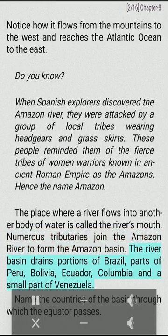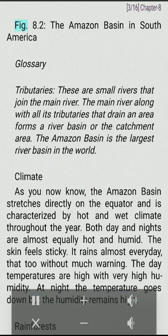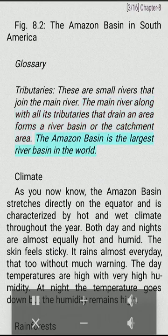Numerous tributaries join the Amazon River to form the Amazon Basin. The river basin drains portions of Brazil, parts of Peru, Bolivia, Ecuador, Colombia and a small part of Venezuela. Name the countries of the basin through which the equator passes. Tributaries are small rivers that join the main river. The main river along with all its tributaries that drain an area forms a river basin or the catchment area. The Amazon Basin is the largest river basin in the world.